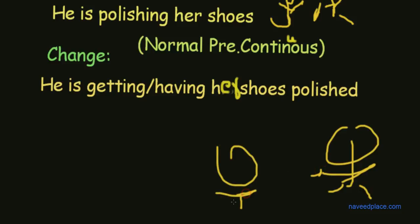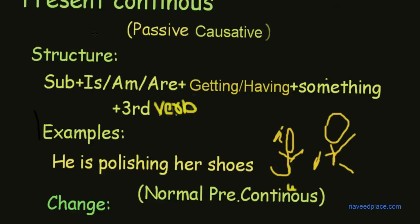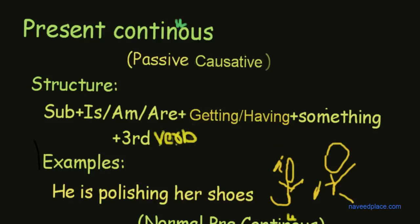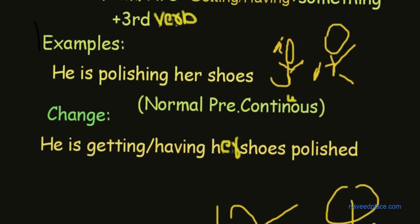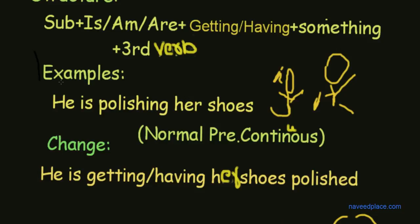So for example, he is there. So he is doing, okay. So what is the example? He is getting or having her shoes polished. This is present continuous passive causative because we are wanting someone to do something as a professional service. This is the example of present continuous passive causative.